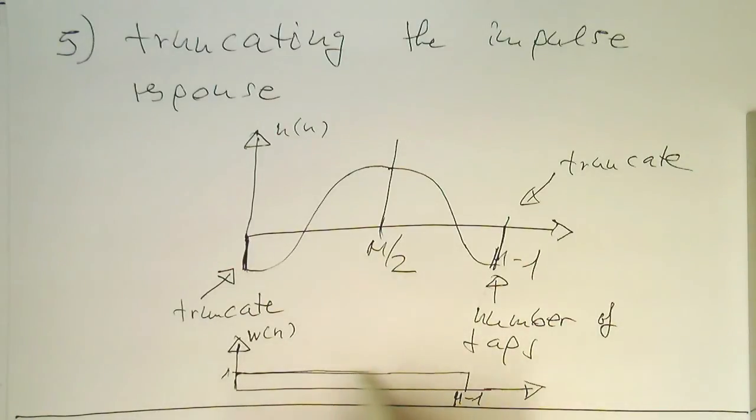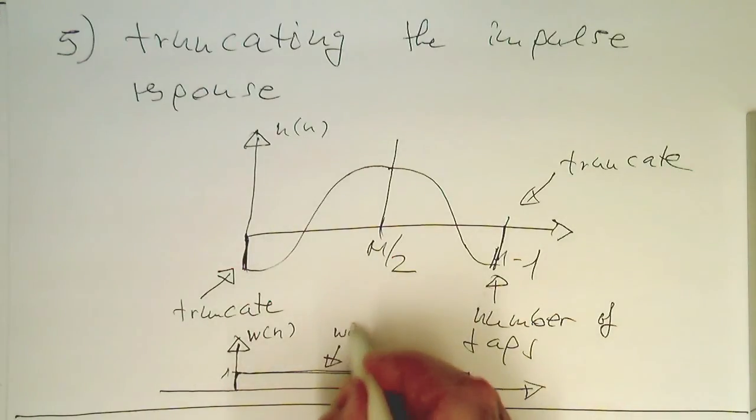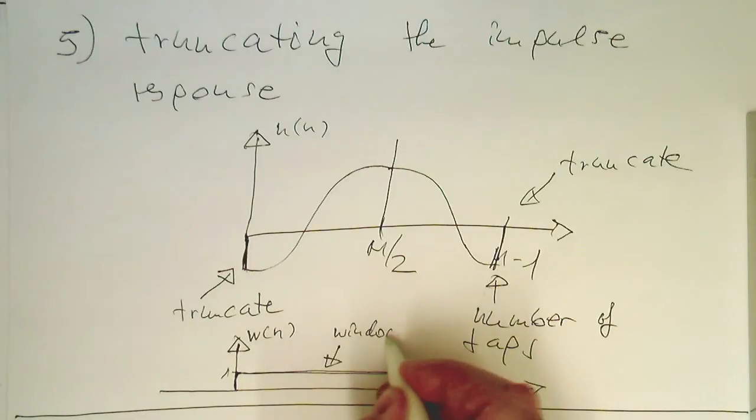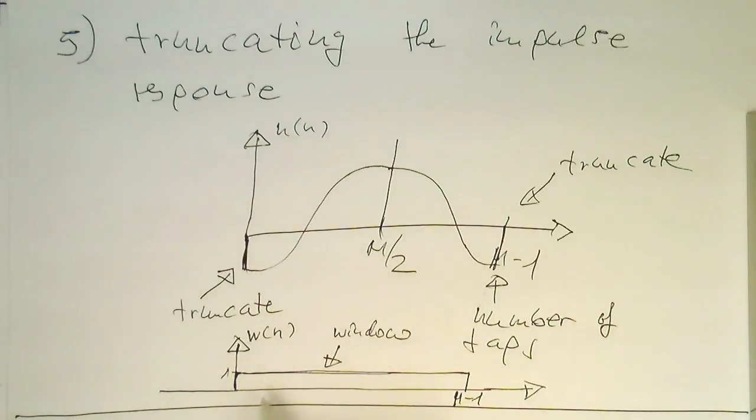It just stays up like this, then switches off here, and it's obviously also 0 for negative time. A function like this is called a window function. In this case, we have a rectangular window.